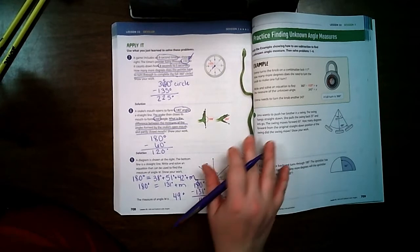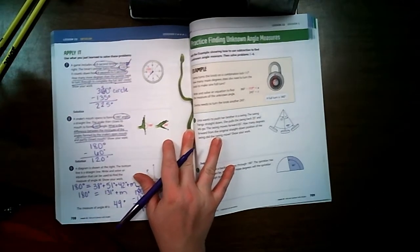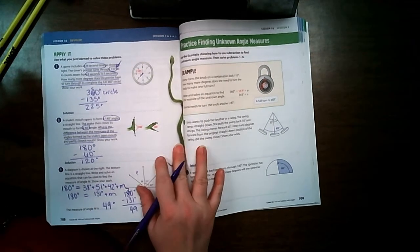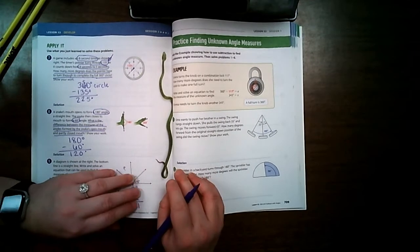If you feel like you're getting the hang of this, go ahead and do pages 709 and 710 on your own. And then when you're finished, come back and check your answers. If you feel like you still are needing some more help, go ahead and follow along as I complete those two pages.